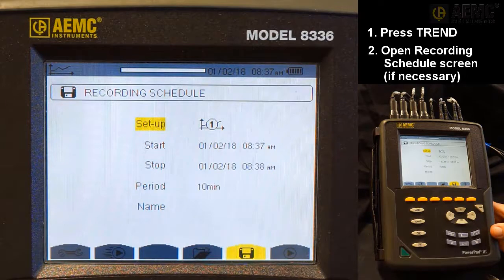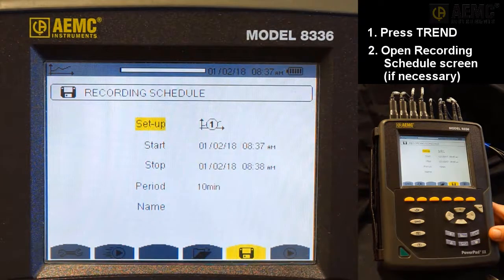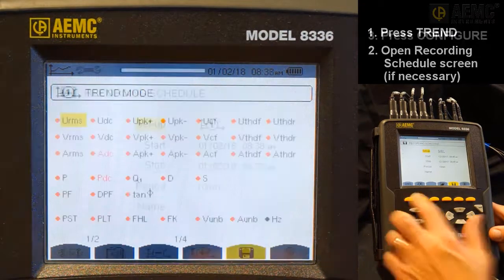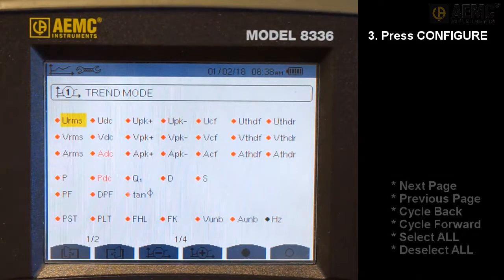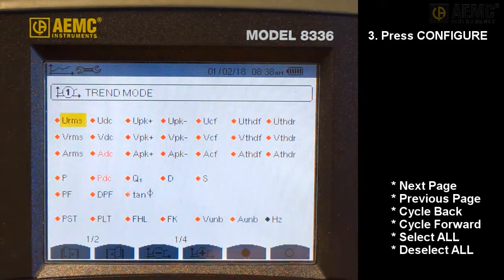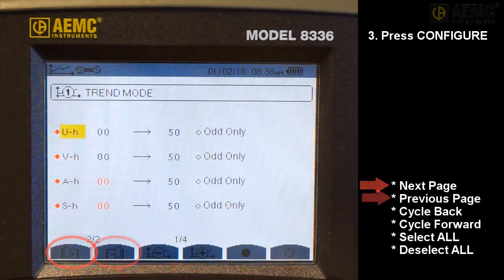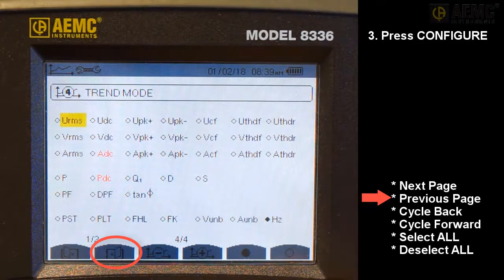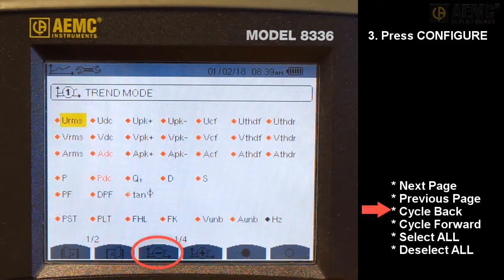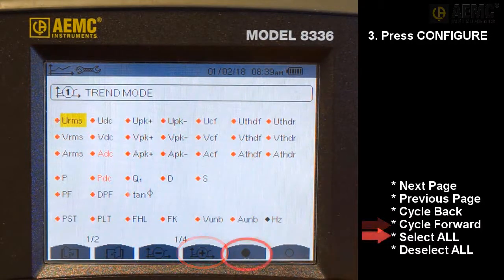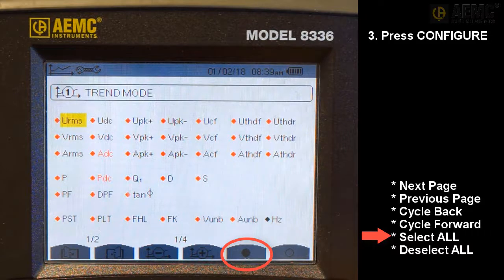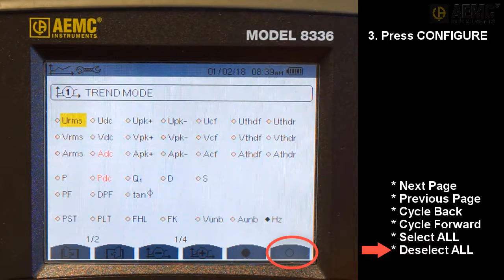This screen enables you to configure, start, and schedule a recording. In our example, we will begin by selecting measurements to include in the recording. So, press the Configure Function button on the left to display the Trend Mode screen. At the bottom of the Trend Mode screen are a set of Function button icons. From left to right, pressing each button displays the next page of quantities, displays the previous page of quantities, cycles backwards through a series of four programmable configurations, cycles forward through these configurations, selects all available quantities to be included in the recording, and deselects all available quantities.